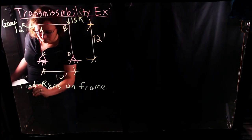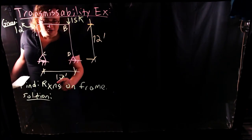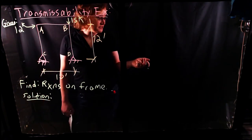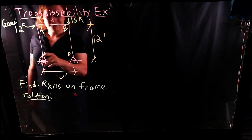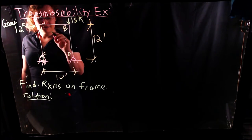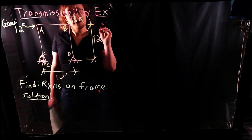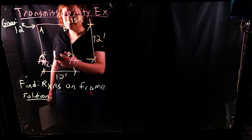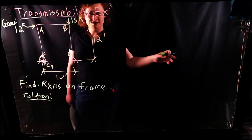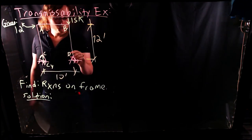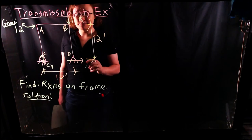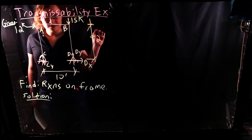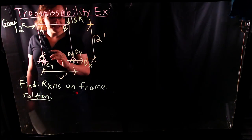So, solution. The first thing I'm going to do is label the reactions on this frame. We have a roller support and a pin support. At the roller support, we're going to have a single vertical reaction, which I'll call C-Y — C because it's on joint C, Y because it's in the vertical direction. I generally assume all my reactions are to the right and upward, and if I get a negative, I know they're pointed in the opposite direction. At D, which is a pin support, I'll have a horizontal reaction D-X and a vertical reaction D-Y. This problem will be considered solved when we determine mathematically C-Y, D-X, and D-Y.